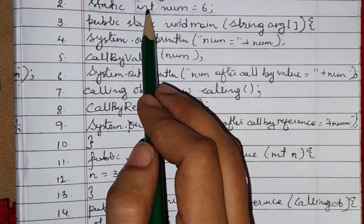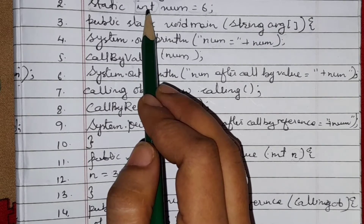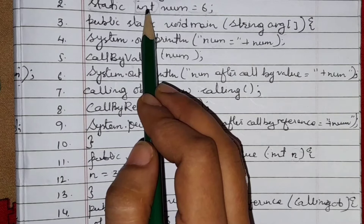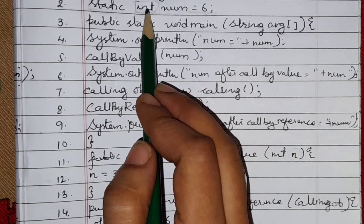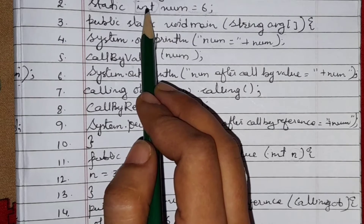Out of those 8, 'int' is one primitive data type. If your program is using a primitive data type and calling it in the middle of a program, it is called by value. In call by reference, the data types are non-primitive — not one of those 8 — then it will be called by reference.